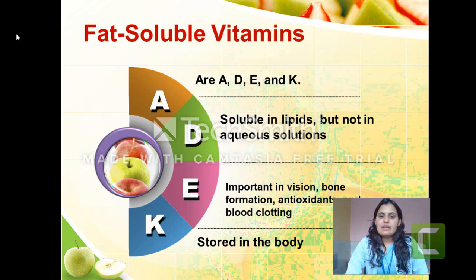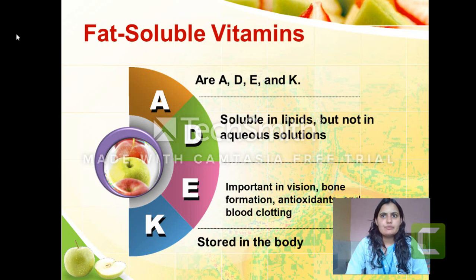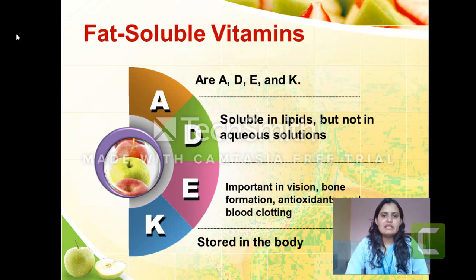What is the meaning of fat-soluble vitamins? As already mentioned, they are mainly four: A, D, E, K. As the name suggests, fat-soluble vitamins are soluble in lipids but not in aqueous solution — they are not soluble in water, only in fats and lipids. They are important for vision, bone formation, antioxidant activity, and mainly blood clotting.